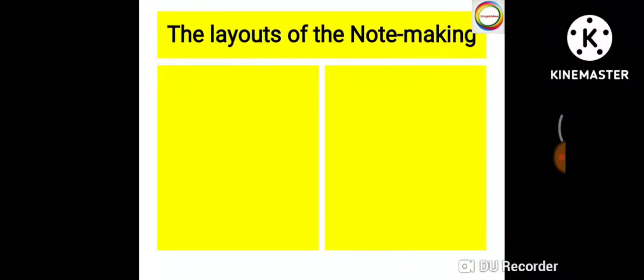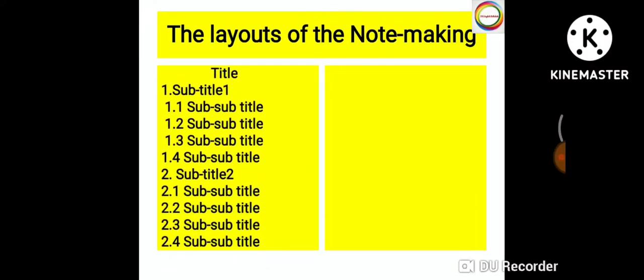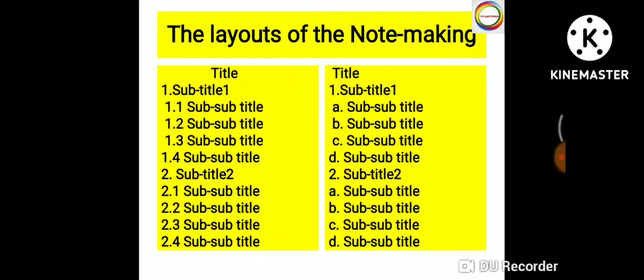The layouts of note-making: There are two types of accepted indenting. The first indenting shows title at the top, then number one with 1.1, 1.2, 1.3, 1.4 as sub-sub titles, then number two with 2.1, 2.2, 2.3, 2.4.